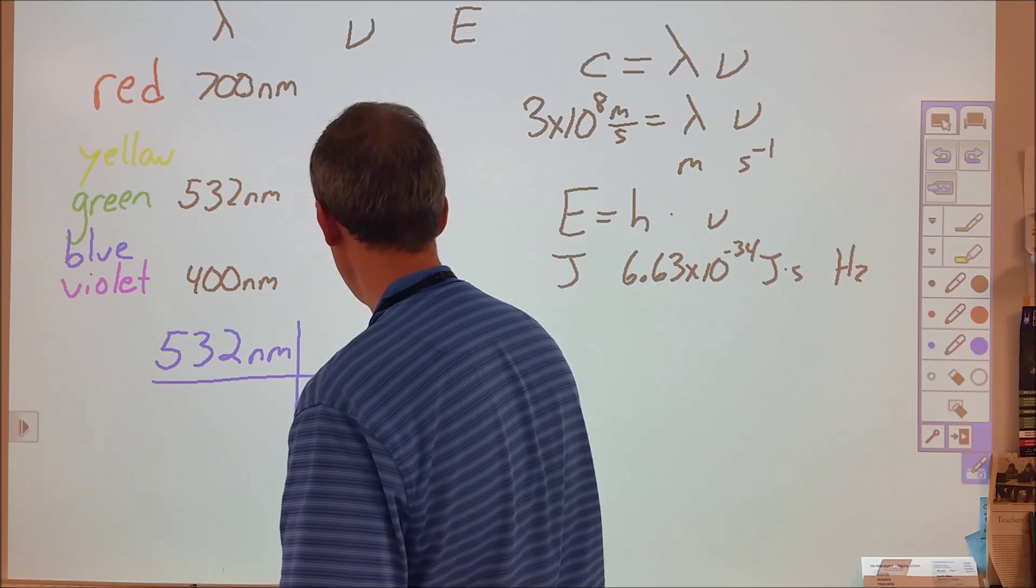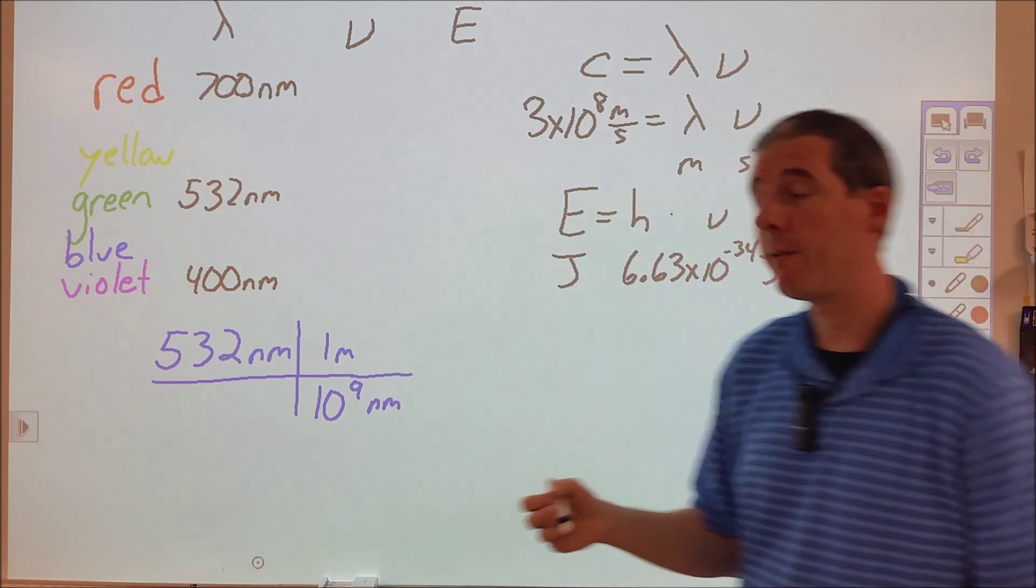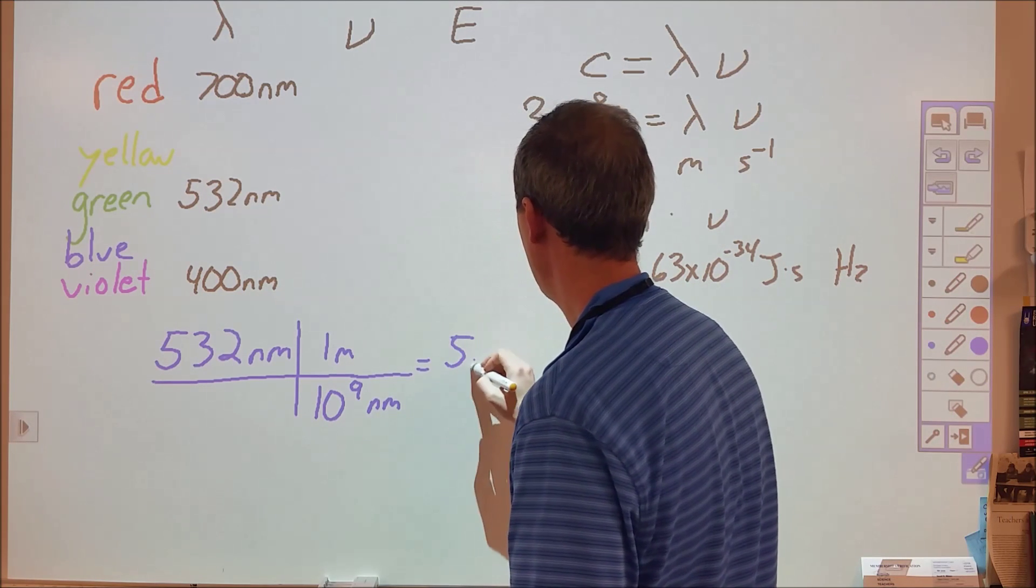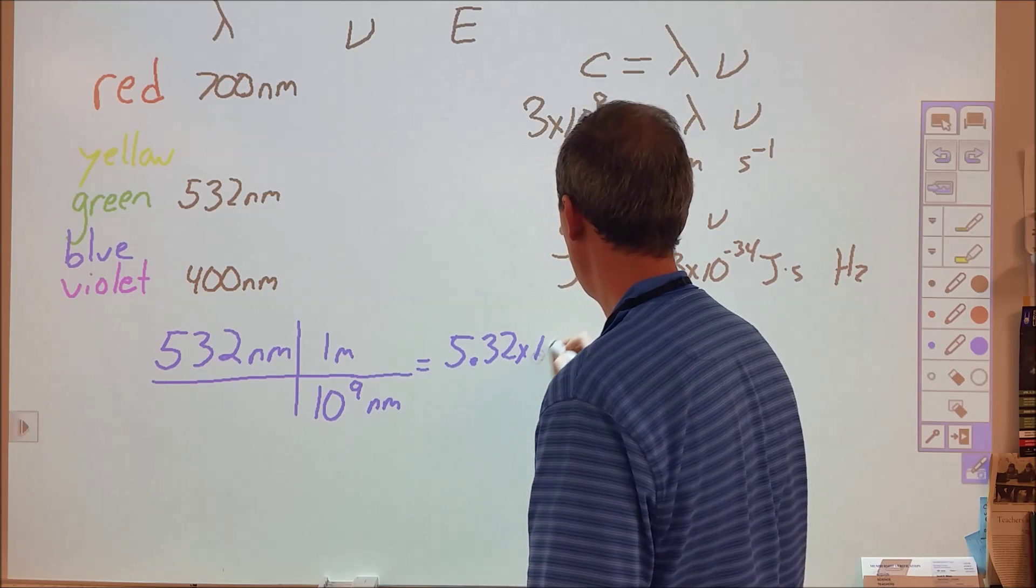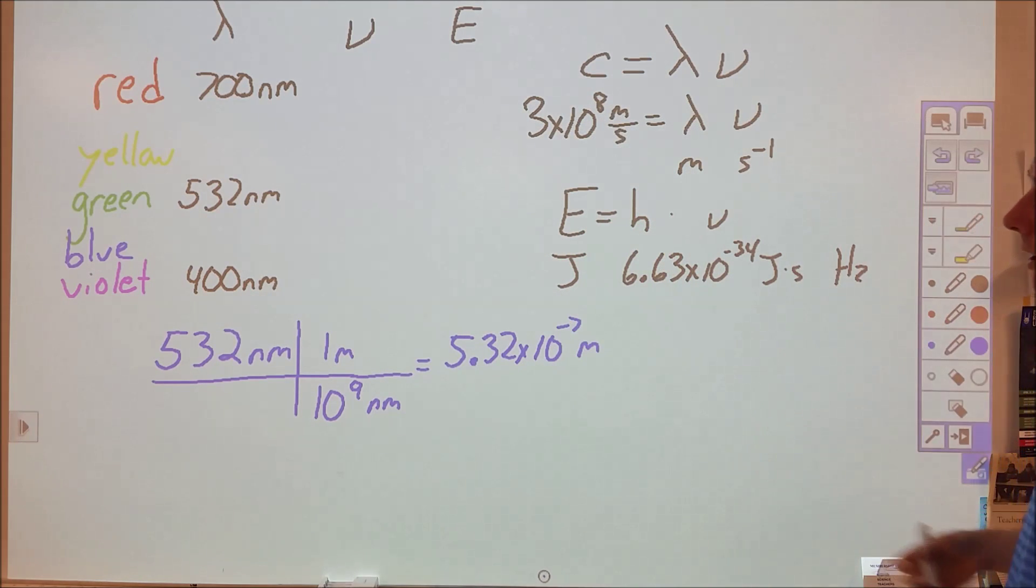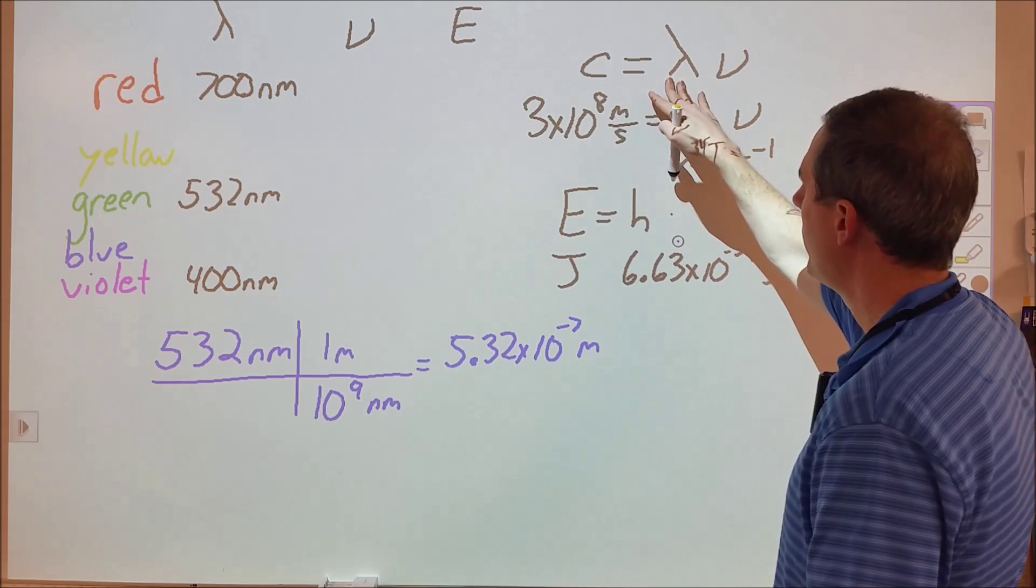There are a billion nanometers in one meter. We can divide 532 by a billion, and that will come out to be 5.32 times 10 to the negative 7th meters. In fact, all of the wavelengths are 10 to the negative 7th meters for all of the visible light.